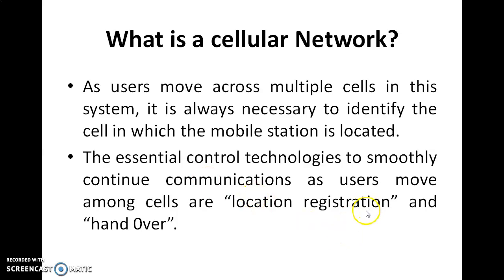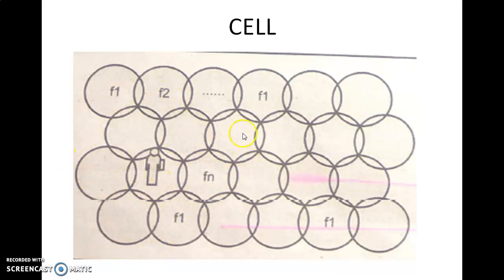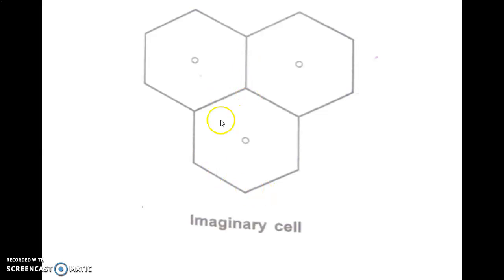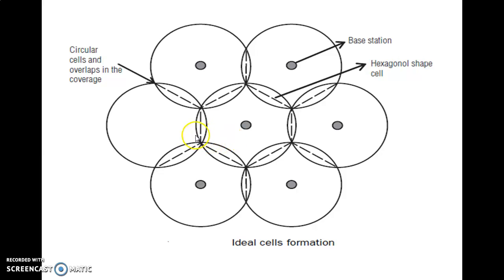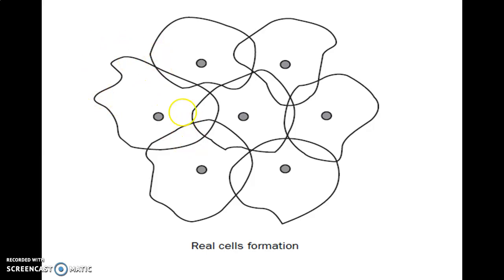The control technologies are location register and handover — we have already seen these. This is how your cell will look like. This is the shape of an imaginary cell. Ideal cells will be looking like this in circular shape, connected. You have a base station and the hexagonal cell will be like this — circular cells. They overlap in coverage. But the real cell formation will be in something like this shape.